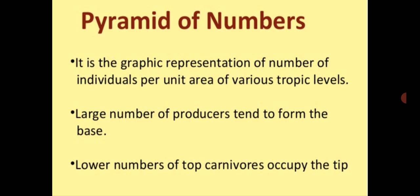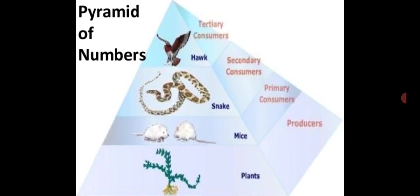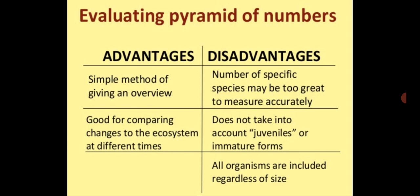A large number of producers tend to form the base, and a lower number of top carnivores occupy the tip. The base of the pyramid always represents the numbers of primary producers, and the subsequent structures represent the number of consumers at every successive level. The advantage of the pyramid of numbers is it is a simple method of giving an overview, and it is good for comparing changes to the ecosystem at different times.